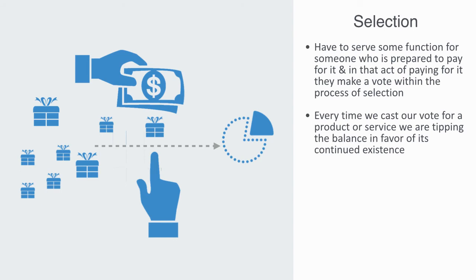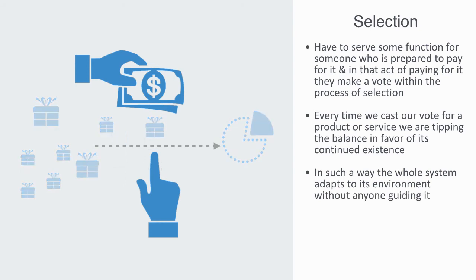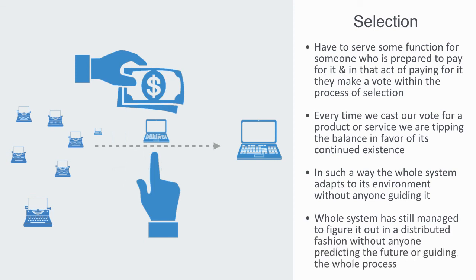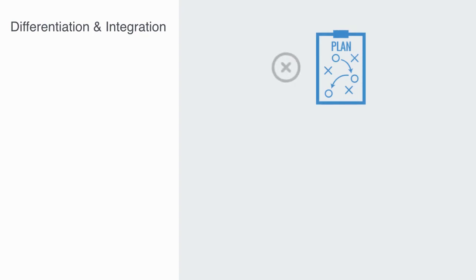In that simple act of choosing, some products or businesses have lived on to become more prevalent within the next life cycle of the system, while others have come closer to being discontinued and thus becoming less prevalent in the future. In such a way, the whole system adapts to its environment without anyone saying that we should switch from typewriters to computers because they believed that an information age was around the corner. The whole system has still managed to figure that out in a distributed fashion without anyone predicting the future or guiding the whole process.